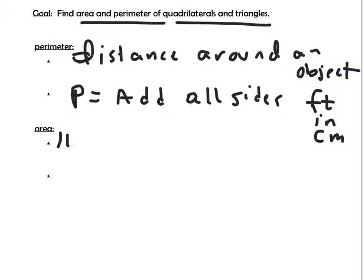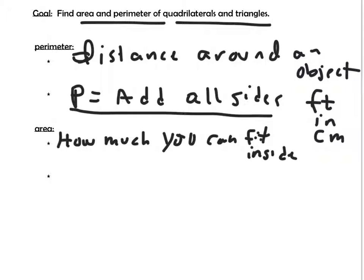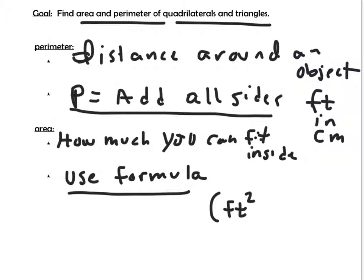Now area, area is how much you can fit inside of an object. And here's where it gets tricky. When you're finding the area, unlike perimeter where you have to just add all the sides, you have to use a formula, and it depends on your shape which formula you need to pick. Most of the time it's pretty easy. You just plug numbers into a formula, but sometimes you might have to figure out pieces of that formula using things like trig or Pythagorean theorem. Units on area, as opposed to perimeter where it's feet, it's going to be square feet or square centimeters.